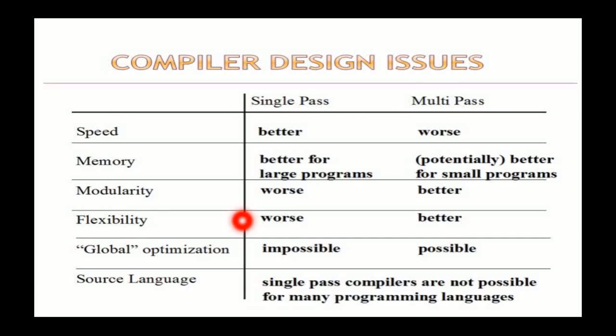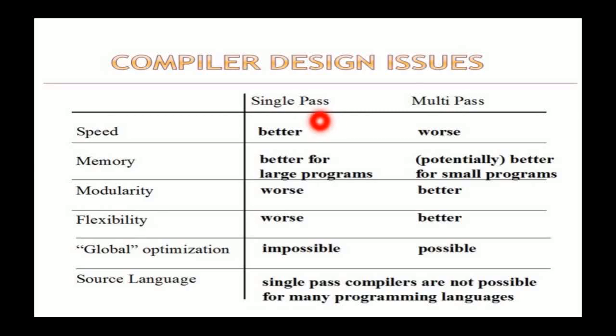In a single-pass compiler, it is not possible for the same compiler to process source code written in both C and Java. But in the case of a multi-pass compiler, it is possible to create a compiler that compiles source code from multiple languages — whether it's C, Java, or any other kind of source code.